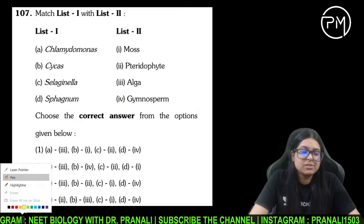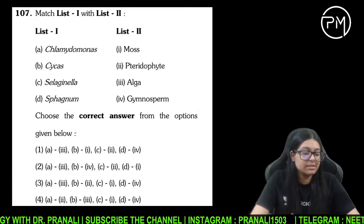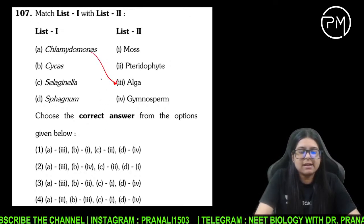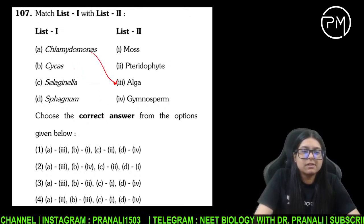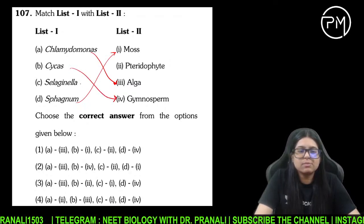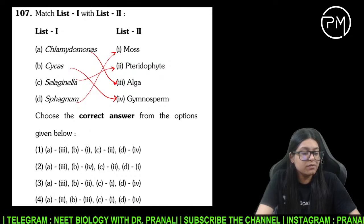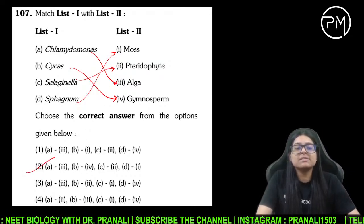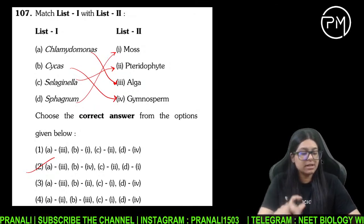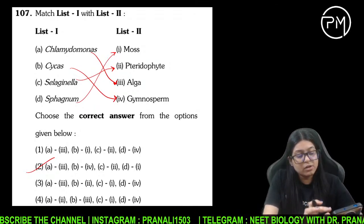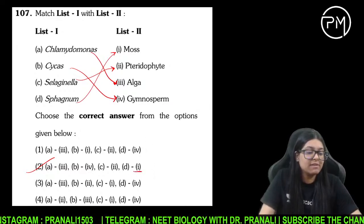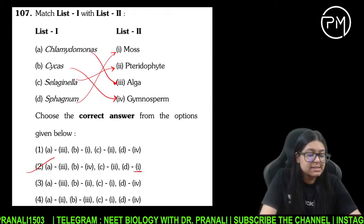Question number 107: match the column. Chlamydomonas — alga. Phir Sphagnum — moss. Cycas — gymnosperm. Selaginella — pteridophyte. Examples match karne the ki kaun kis ko belong kar raha hai. Agar aapko pata hota ki jo moss hai woh kya hai — Sphagnum hai — toh D ka answer 1 lagate ho.